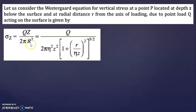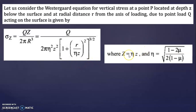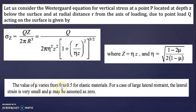You can elaborate and write sigma Z as Q divided by 2π·μ²·Z² into [1 + (R/μZ)²] to the power 3/2, where μ̄ = μ·Z and μ = √[(1 − 2ν) / (2(1 − ν))]. The value of ν varies from 0 to 0.5 for elastic materials. For a case of large lateral restraint, the lateral strain is very small and ν may be assumed as 0. This is the equation to find vertical stress using Westergaard analysis.